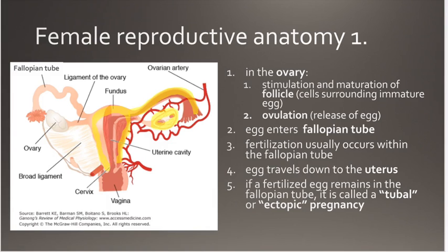The ovaries are attached to the uterus via ligaments, and the ovaries contain the immature follicles and immature eggs. With follicle-stimulating hormone and luteinizing hormone, those eggs are going to mature and they're going to be released.